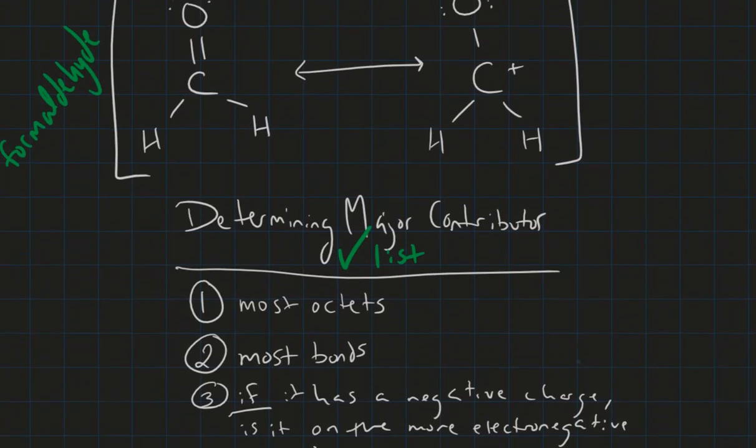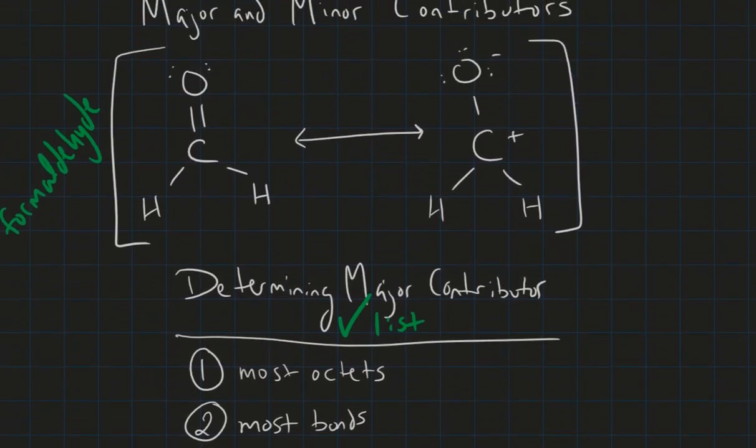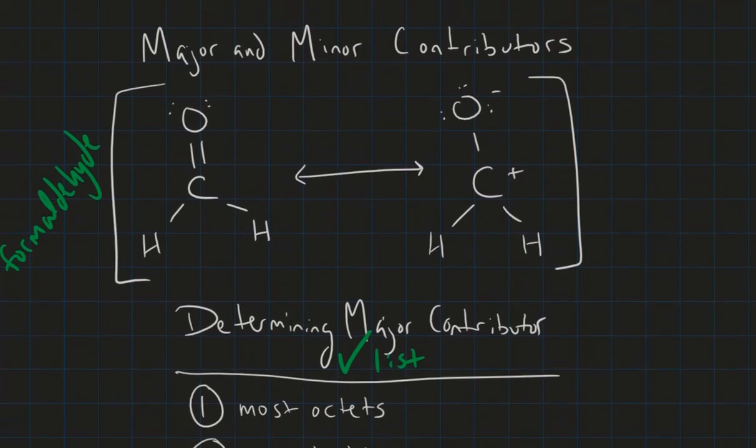Let's go back up to our formaldehyde resonance structures. Which one has the most octets here? We see oxygen has an octet. Carbon does not have an octet. Hydrogen, we can count them as an octet because they're satisfied. But check this out. Oxygen has an octet and carbon has an octet. So immediately, we know this is our major contributor.